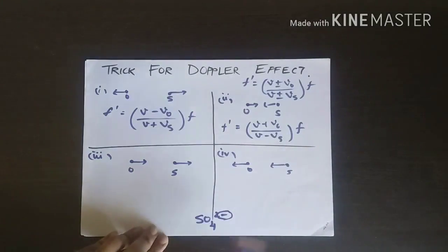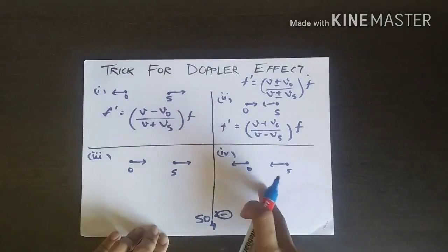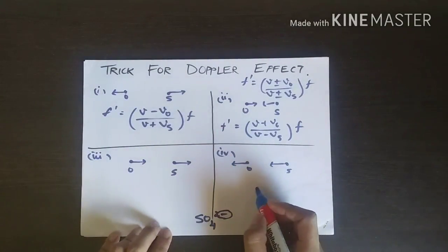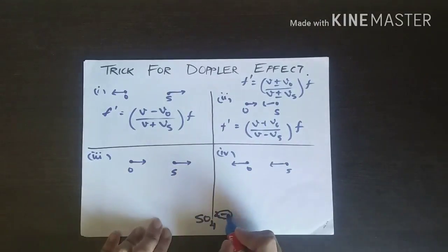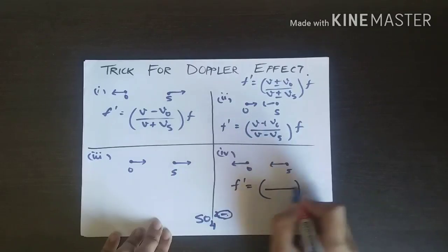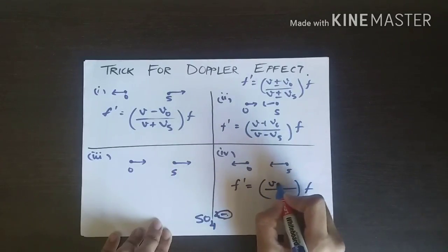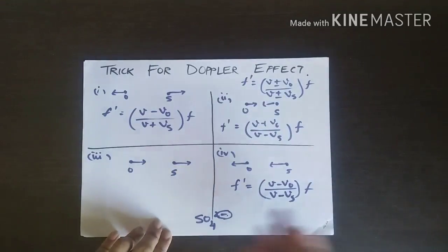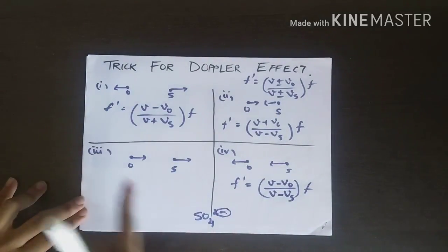The formula will be F' = (V - V₀)/(V - Vₛ) × F. That will be the formula. For the other case, it will obviously be plus. Maybe you can remember it as OS plus—you can take it as operating system or anything, just remember OS plus.